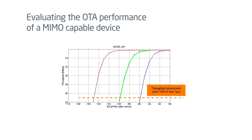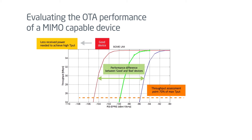The testing procedure generates a performance curve that displays the power required to reach maximum data throughput. The X-axis represents the power in decibel milliwatts, and the Y-axis represents the data throughput in megabits per second. Well-performing devices require less power to reach maximum throughput, resulting in this type of curve.